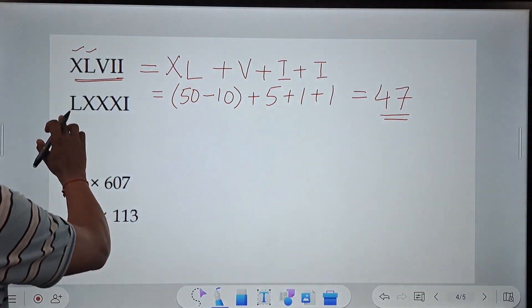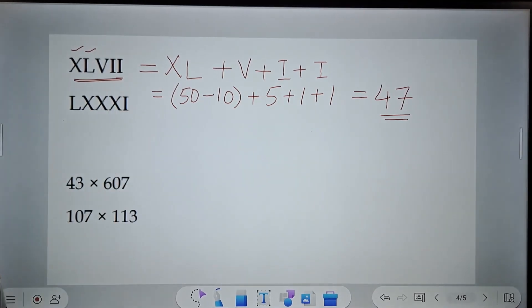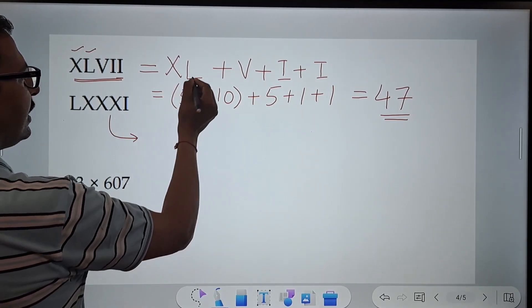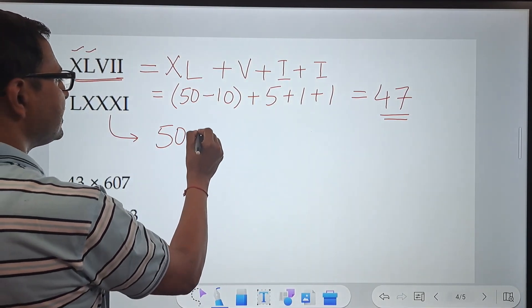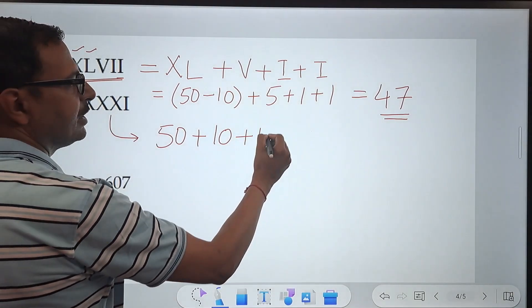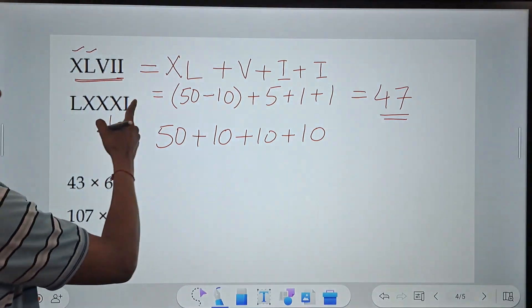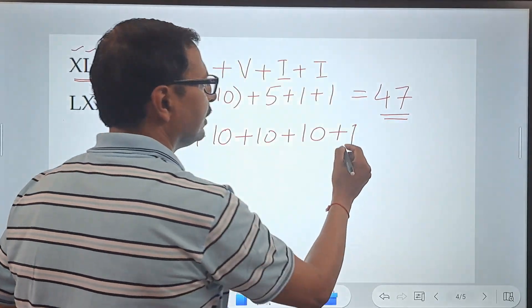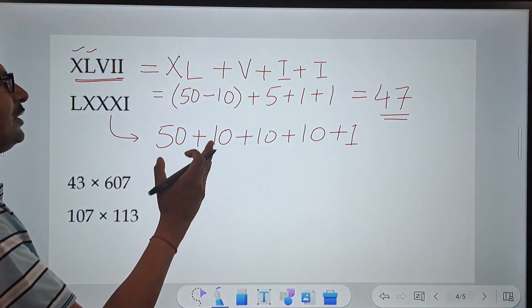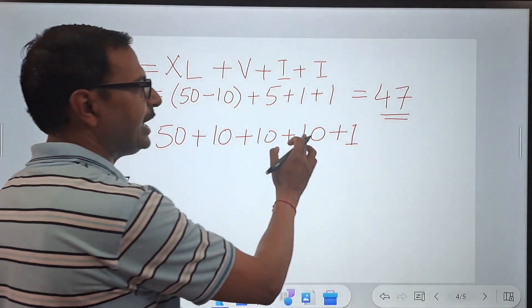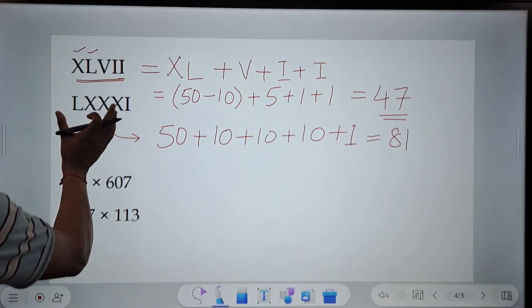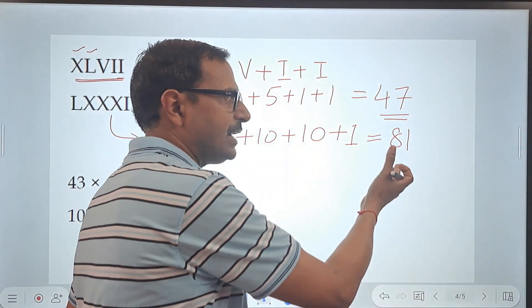Likewise, let's see LXXXI. Now, for this one, that's pretty easy actually. L is 50, right? And X is 10. So 50 plus 10 plus 10 plus 10 because there are 3 X's here. And I. I means 1. Now, there is no negative numbers here. So you can directly add it and get to the numeral. 50, 60, 70, 80, 81. That is the Roman LXXXI and the number is 81.